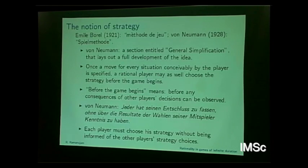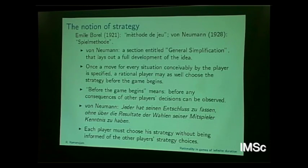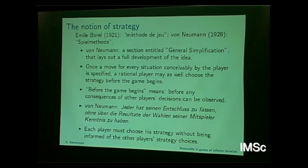The notion of strategy comes from Emil Borel, 1921. It's really 'method of play' according to Borel, which von Neumann copies in 1928. Von Neumann's seminal 1928 paper has a section titled 'General Simplification' — he apparently first wrote it as 'Great Simplification' and the editor objected and he changed it.